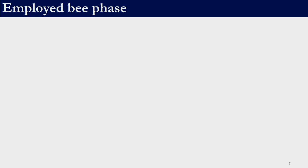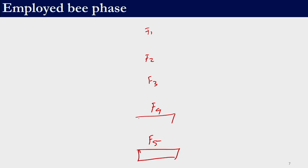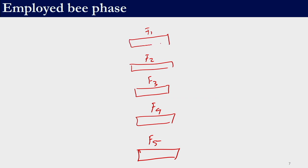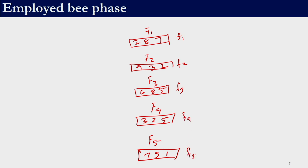In the employed bee phase, let's say we have 5 food sources F1 to F5, each with corresponding decision variable vectors and objective function values f1 to f5. Based on the objective function value, we can calculate the fitness value using the formula from the previous slide. In ABC, the swarm size S is fixed by the user, and the number of food sources, employed bees, and onlooker bees are each S/2. So if the swarm size is 10, there are 5 food sources, 5 employed bees, and 5 onlooker bees.